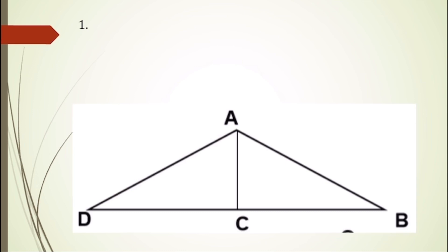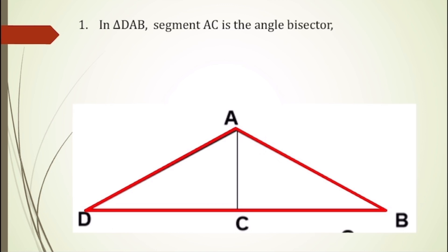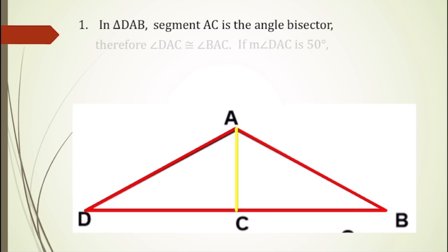Let's consider the following examples. For number one, in triangle DAB, segment AC is the angle bisector. Therefore, angle DAC is congruent to angle BAC. If the degree measure of angle DAC is 50 degrees, then the degree measure of angle BAC is also 50 degrees.